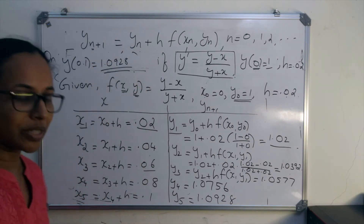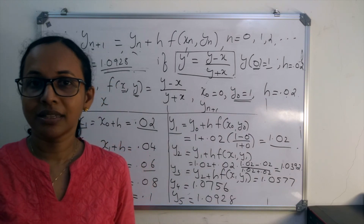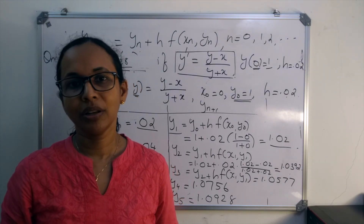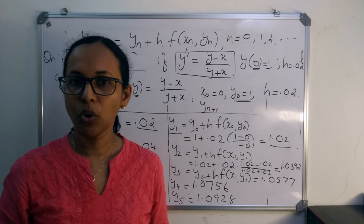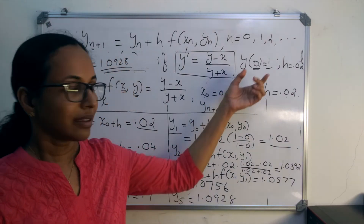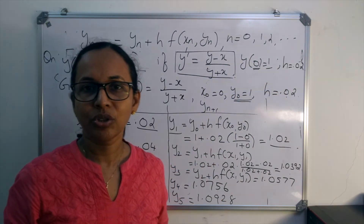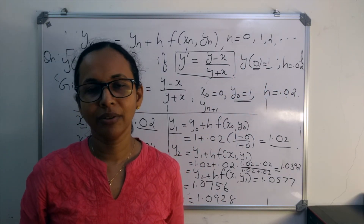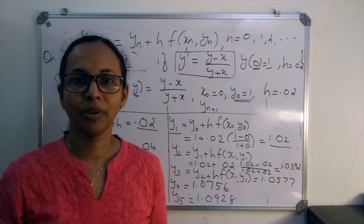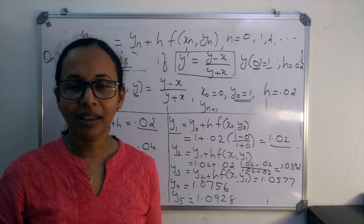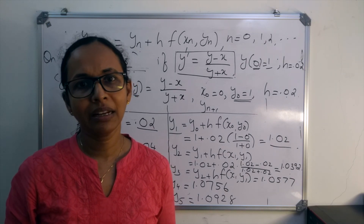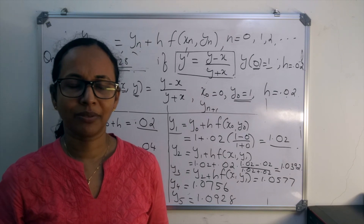To summarize: the Euler method is a step-by-step method for evaluating the numeric solution of a first-order ordinary differential equation using the initial condition. To get a more accurate approximation, choose h as small as possible. Usually, taking h = 0.02 or 0.1 is sufficient for class problems.